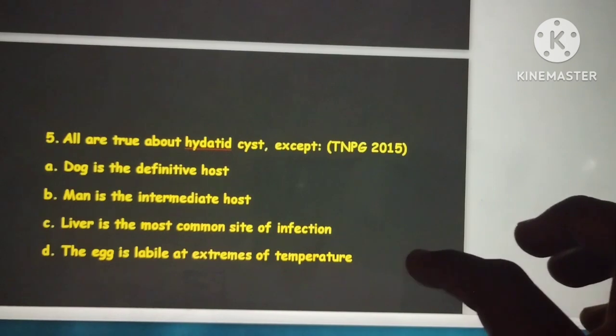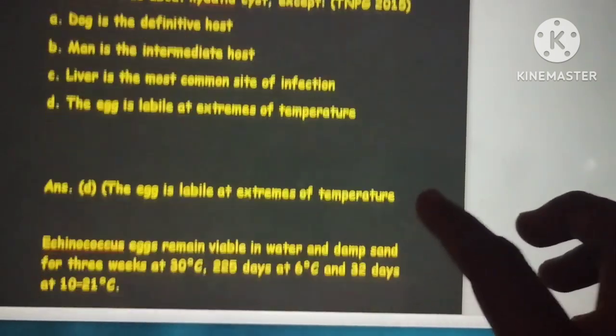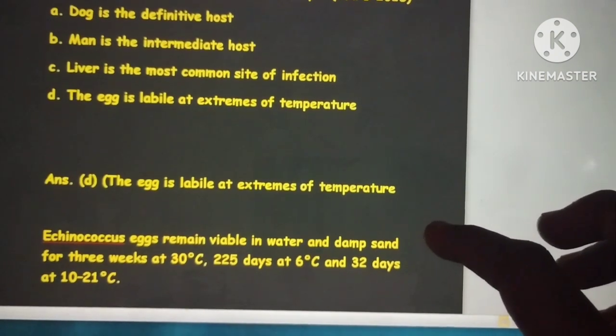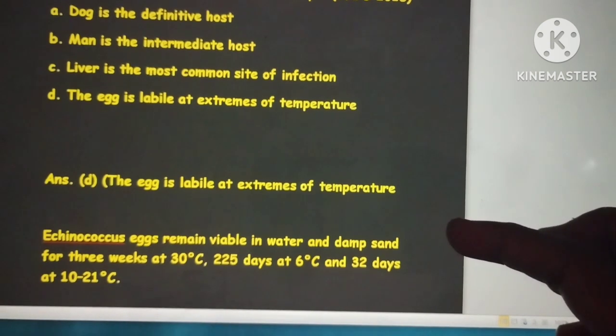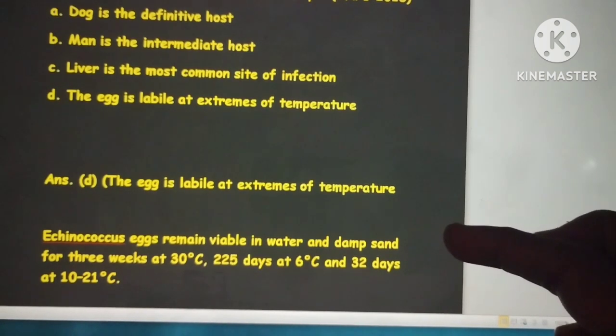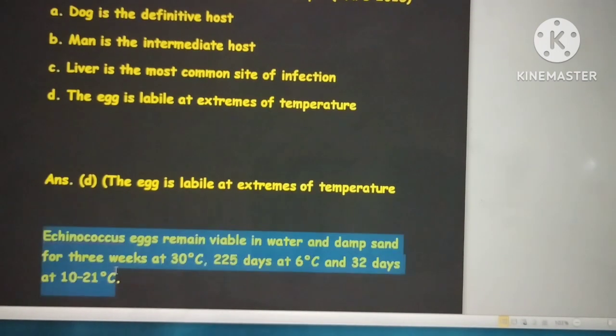The egg is not labile at extremes of temperature. It can remain viable even in damp and extreme temperatures. It can remain viable in water and damp sand for three weeks at 30°C, 225 days at 6°C, and 32 days at 10-21°C.